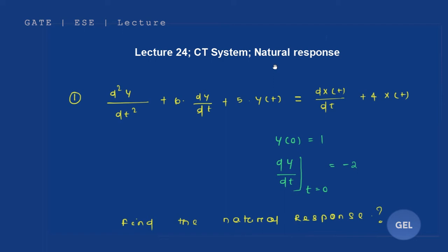The natural response is also called the zero input response, y_zi(t). In the next video lecture, we will learn how to calculate the forced response, that is y_zs(t), which is your zero state response. After that, we will learn how to calculate the complete response, which equals natural response plus forced response: y_zi plus y_zs.